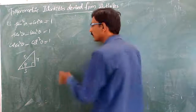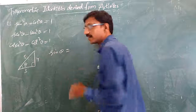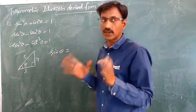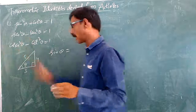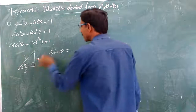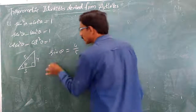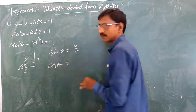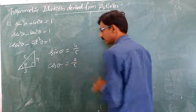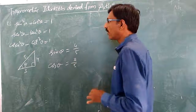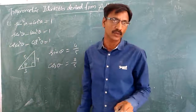Keep in mind — opposite side by 5, so sin θ is equal to 4 by 5, and cos θ is equal to 3 by 5. But whatever the triangle is, sin²θ + cos²θ always equals 1.